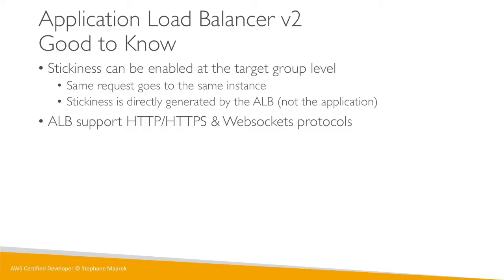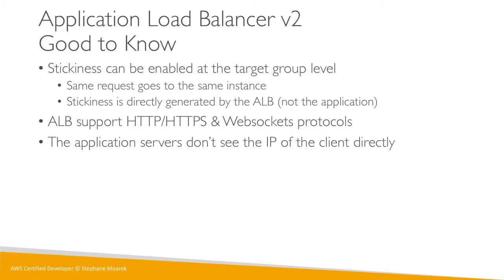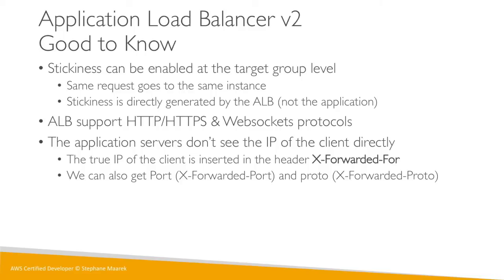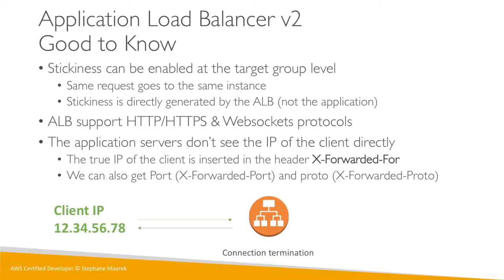ALB supports HTTP, HTTPS, and WebSockets protocols. Importantly, application servers don't see the client's IP directly — this is a very common exam question. The true IP of the client is inserted in a header called X-Forwarded-For. You can also get X-Forwarded-Port and X-Forwarded-Proto. The ALB performs connection termination, establishing a new connection to your EC2 instance, so the instance sees the private IP of the load balancer. To get the client's actual IP, your EC2 instance must look at the X-Forwarded-For header.